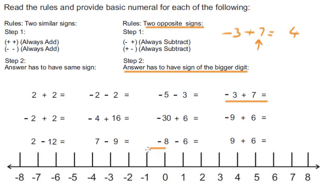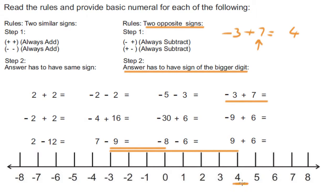Starting from zero: one, two, and three. Then seven steps in the positive direction: one, two, three, four, five, six, and seven. And we are standing at positive four. That's where we are, and that's what it means.